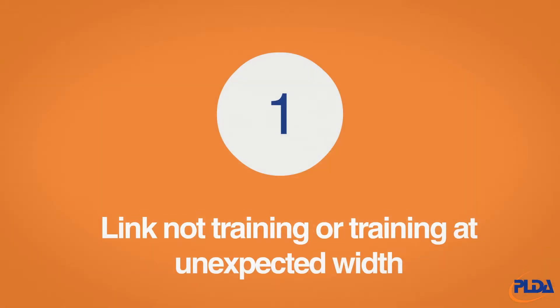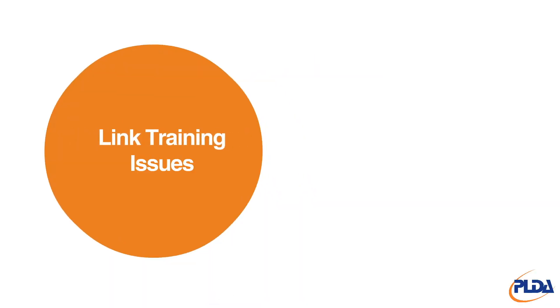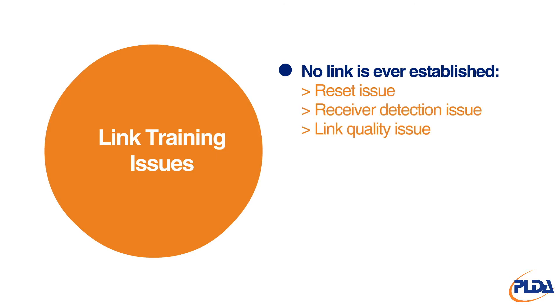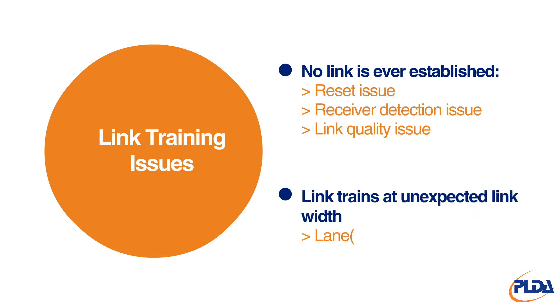A link not training or training at an unexpected width. A link may not be established because of reset, receiver detection, or link quality issues, while a link retraining at an unexpected width may indicate a lane reliability issue.